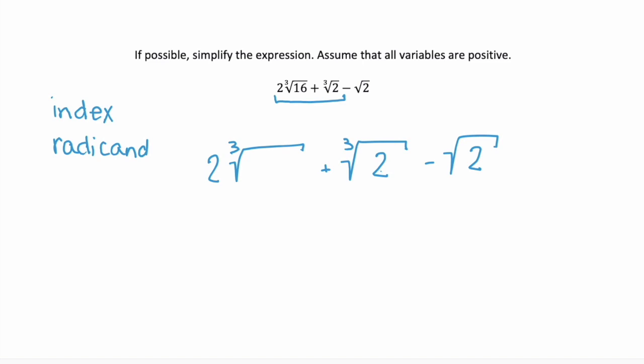The radicand of our second is 2. We want to know if 16 is something times 2. Well, 16 is 8 times 2, and we also know that 8 is the same as 2 cubed. So this first radical is really the cube root of 2 cubed times 2, and when you take the cube root of 2 cubed you get 2.